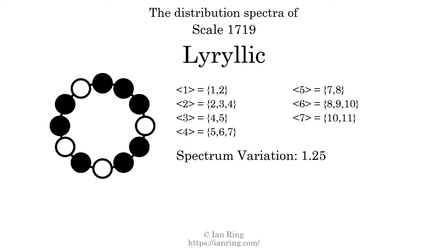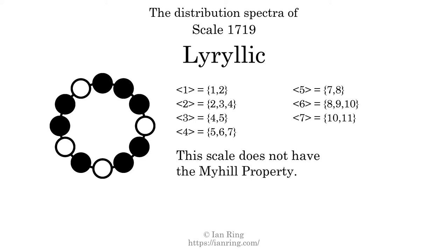Since the variation is greater than 0, this indicates that the scale is not perfectly even. The highest spectrum width is 2. Since this is greater than 1, we know that this scale is not maximally even. If every spectrum has exactly two specific intervals, we call that the Myhill property. This scale does not have the Myhill property. Since the generic interval ranges do not overlap, this scale is proper. But it is not strictly proper because some specific intervals appear in more than one spectrum.